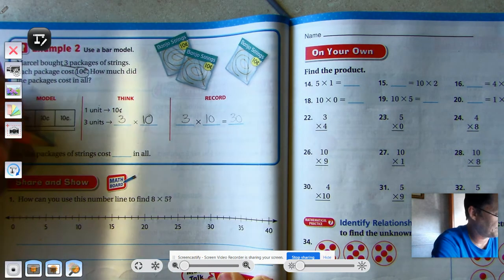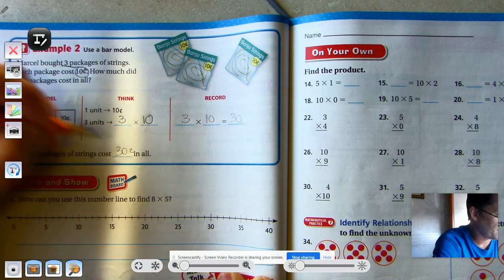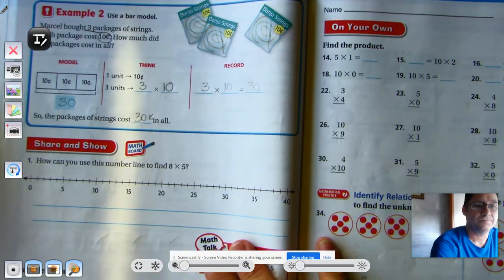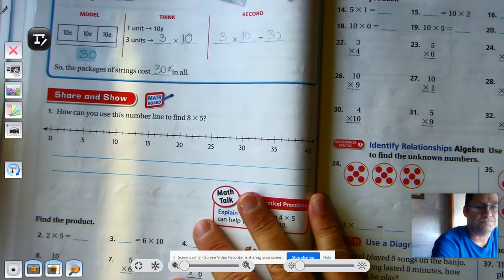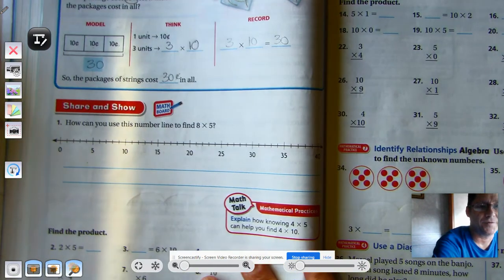And three times 10 would be 30. 10, 20, 30. So they cost 30 cents in all. All right, so now let's practice these three methods.